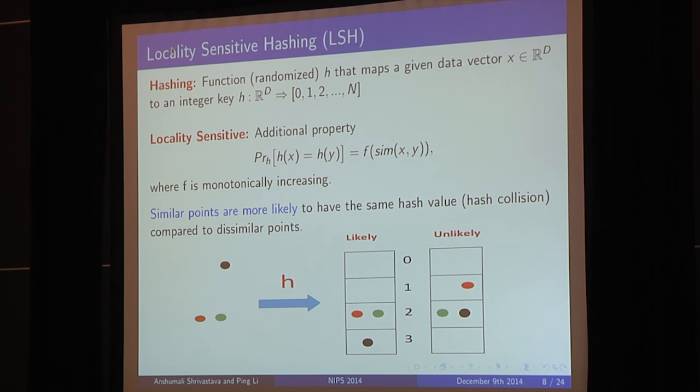Now, it's interesting, and there is a lot of work on existence of such hash functions. For the purpose of this talk, it's sufficient to assume that there exists a hash function for L2 distance. And there, the hash functions are typically based on random projection and quantization. And it can be shown that the collision probability under these hash functions is monotonic in the L2 distance. And there are more works on it.